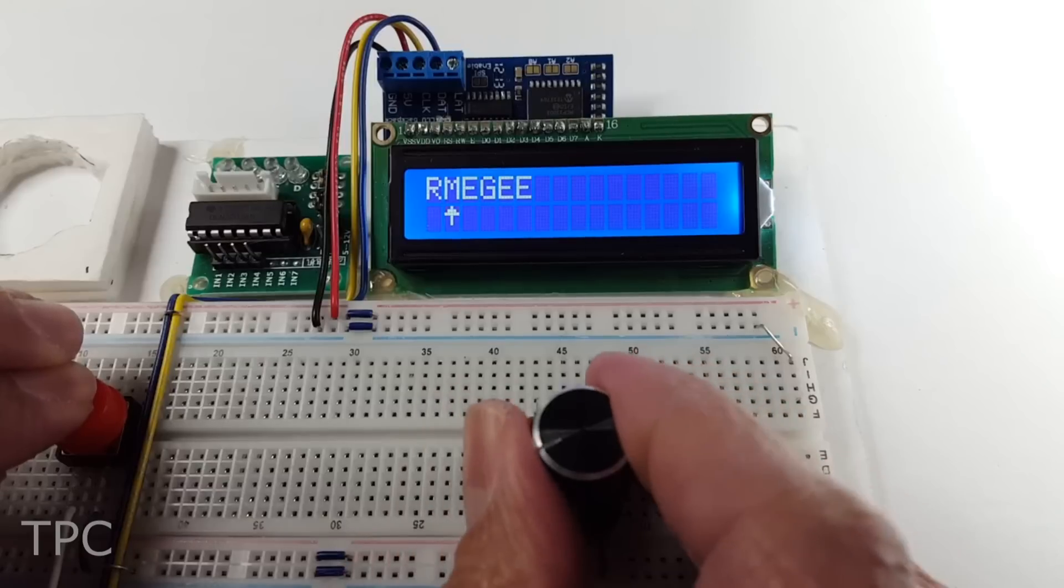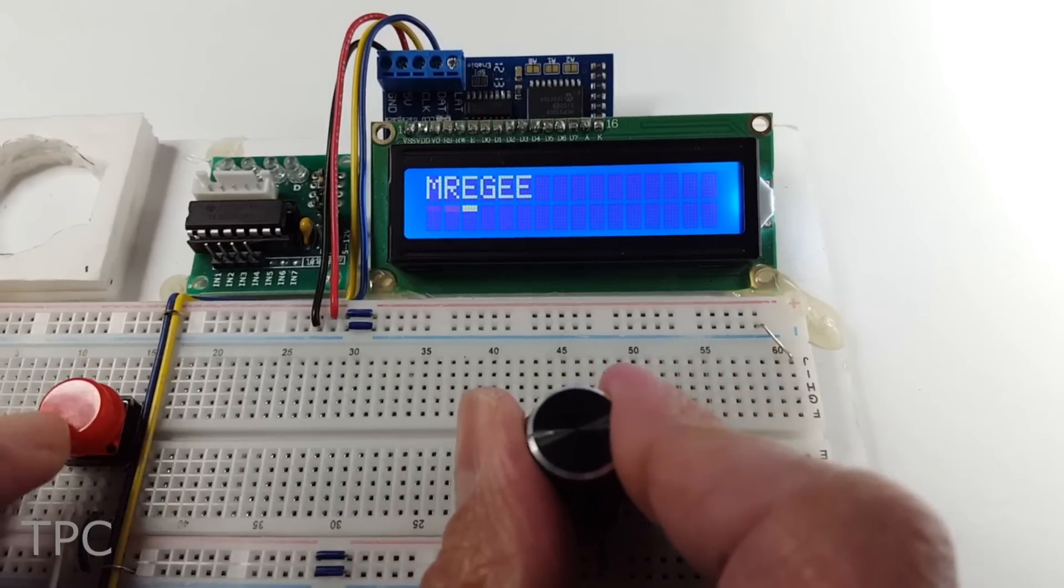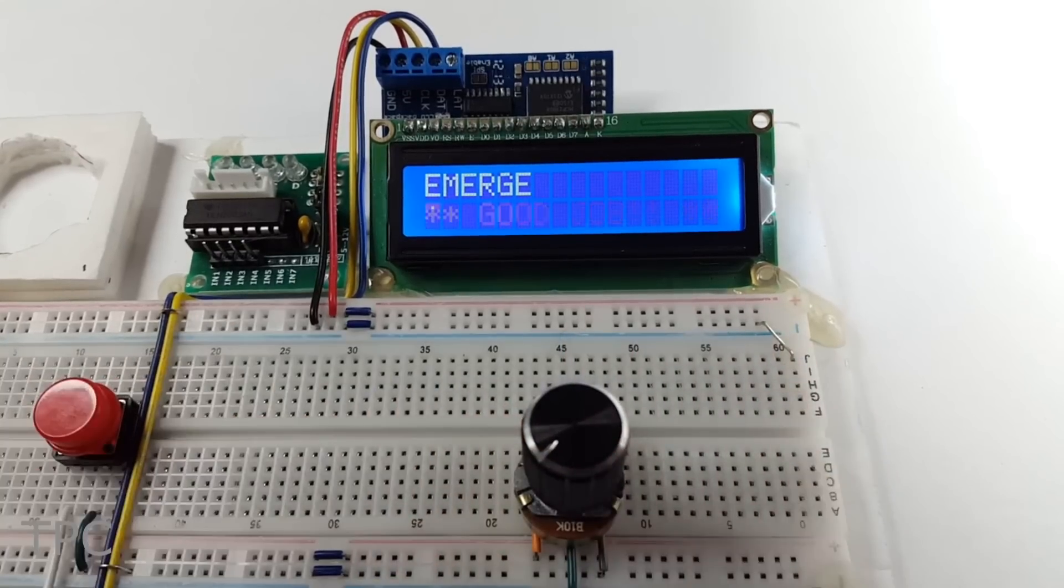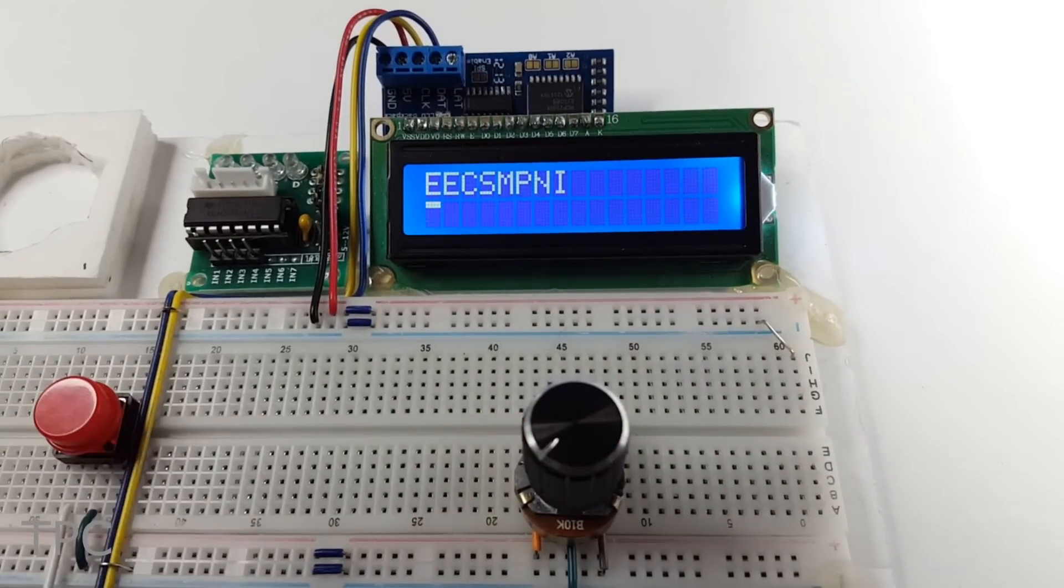To move a letter, hold the button and drag it with the mouse either left or right. The LCD displays a message once the user correctly unscrambles a word. To guess the next word, just press the button again and keep playing.